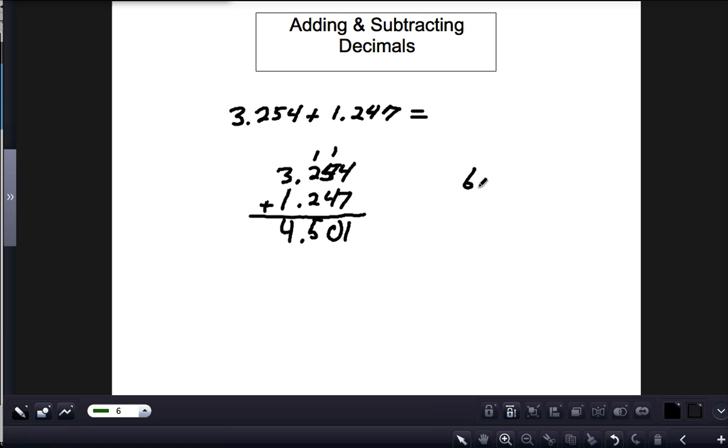had 6.21 minus 3.5, we would again rewrite it vertically: 6.21 minus 3.5. Sometimes students find it helpful to add a